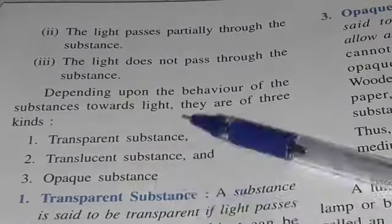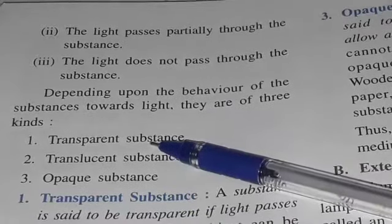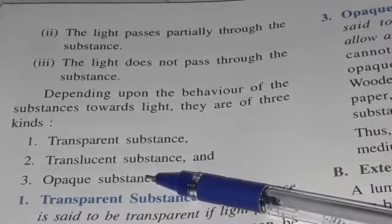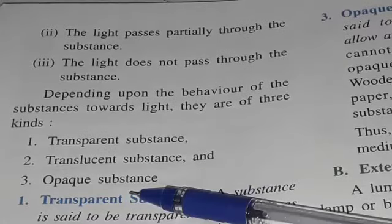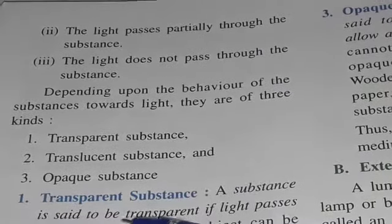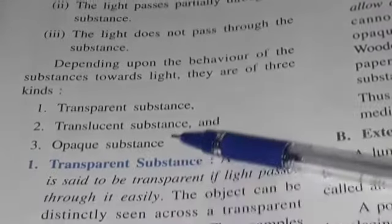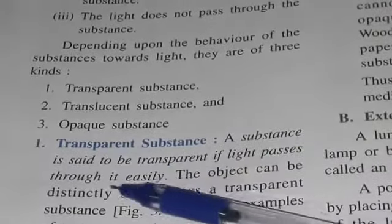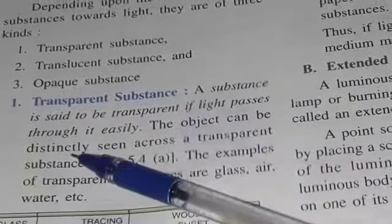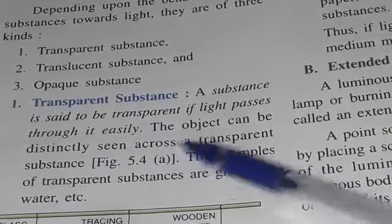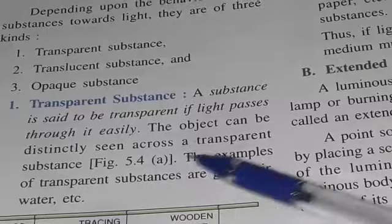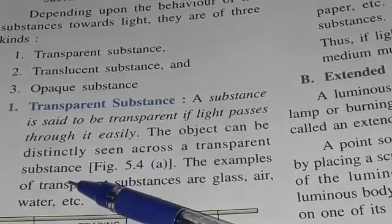There are three kinds of substances. The first is Transparent, second is Translucent, and third is Opaque Substance. Number one: Transparent Substance. A substance is said to be transparent if light passes through it easily. The object can be distinctly seen across a transparent substance.